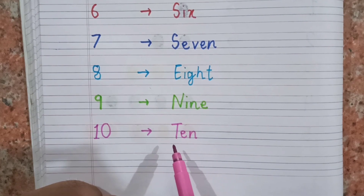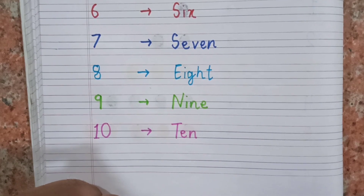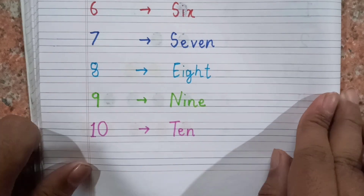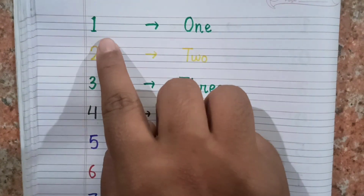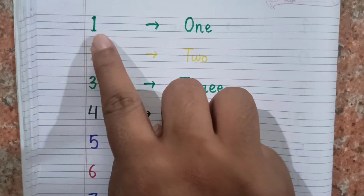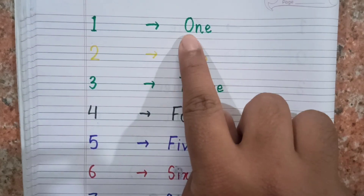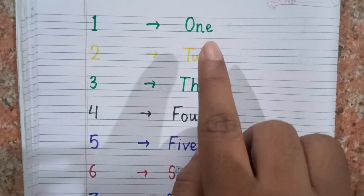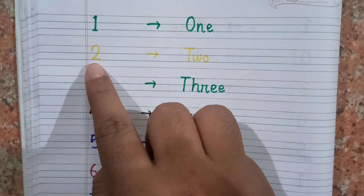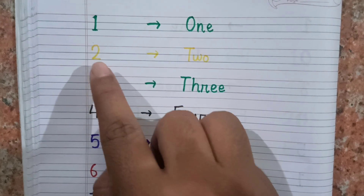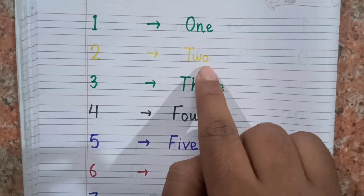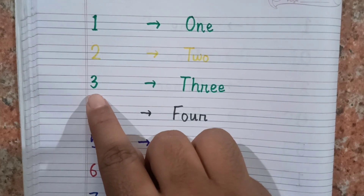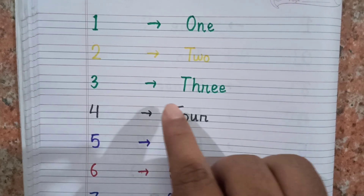Okay kids, so again repeat the numbers with me. The first number is one — this is one, and the spelling of one is O N E. One. After one, the next number is two, and the spelling of two is T W O. Two. After two, the next number is three.